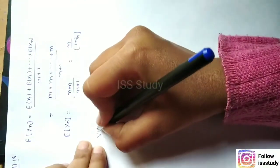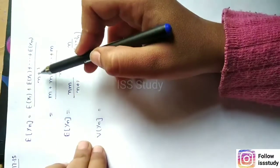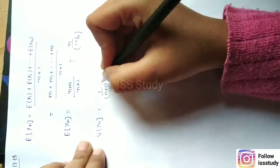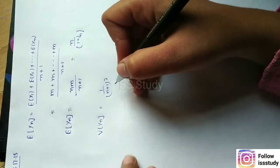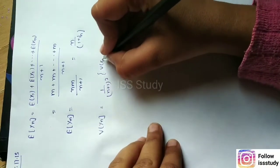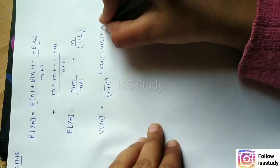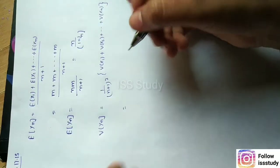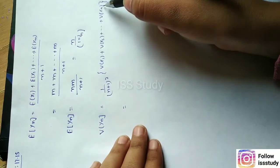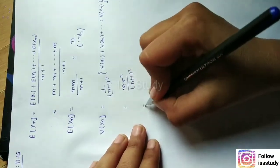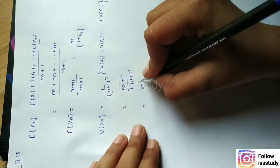Now we compute the variance of yn. When we apply the variance operator, we get a factor of 1/(n+1)² in the denominator. Since the samples are independently drawn, the covariance terms vanish. So we get variance of x1 plus variance of x2 plus up to variance of xn, each equal to sigma squared, giving n·sigma squared divided by (n+1)².